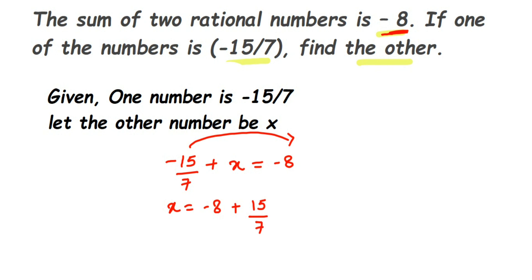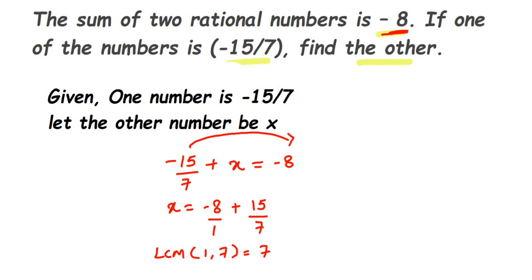Since -8 has no denominator, we write it as -8/1. Now, to add two rational numbers the denominators must be the same. Here we have 1 and 7, which are not the same, so we're going to take the LCM of 1 and 7, which equals 7.